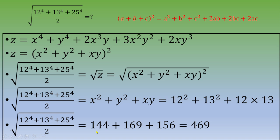Computing the values: 12 squared is 144, 13 squared is 169, and 12 times 13 is 156. Adding these together, we end up with 469. Thank you for watching this video. I hope to see you in the next one.